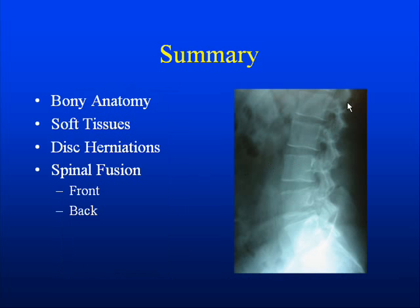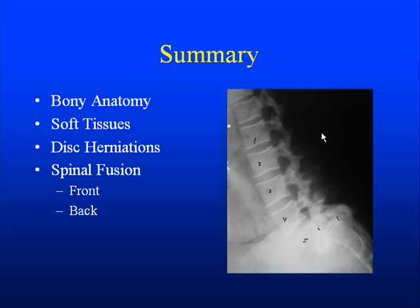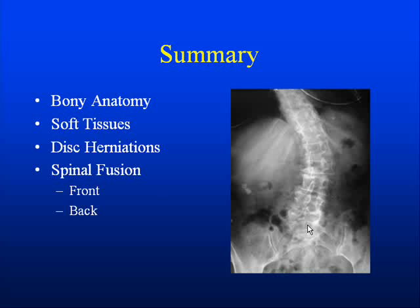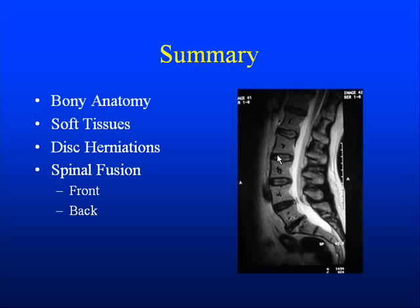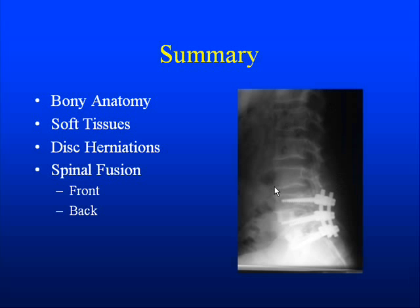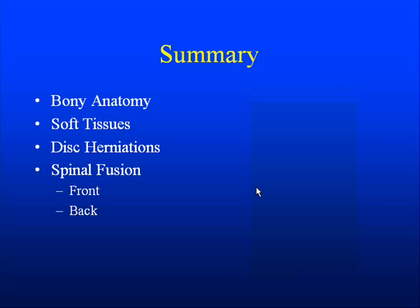In summary, we have seen the lumbar spine X-ray where things line up pretty nicely. We have seen it when things are not lining up well and we have a spondylolisthesis with the bone falling forward. We have seen the frontal view showing us a big curvature which is scoliosis. We have seen a very large disc herniation coming over and pushing on the nerve, likely causing significant back and leg pain. And we have seen normal discs versus degenerated discs which have lost their fluid. Finally, we have seen what the spine looks like after instrumentation and fusion has taken place. This completes our discussion today and thank you for joining us.